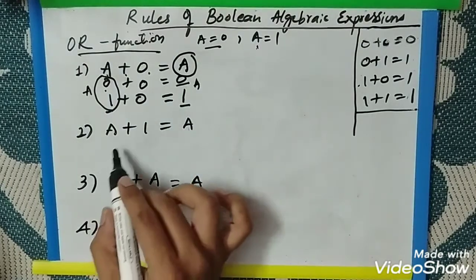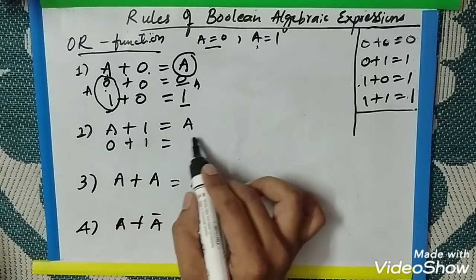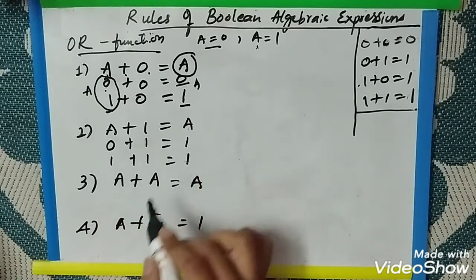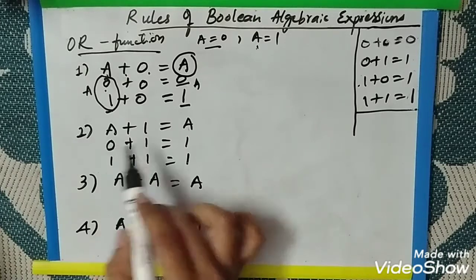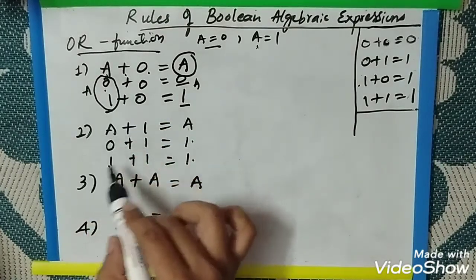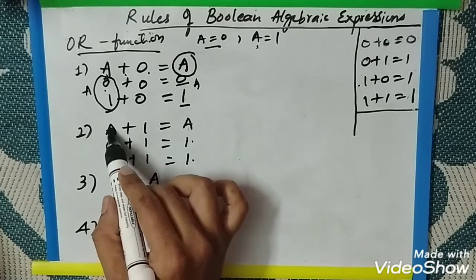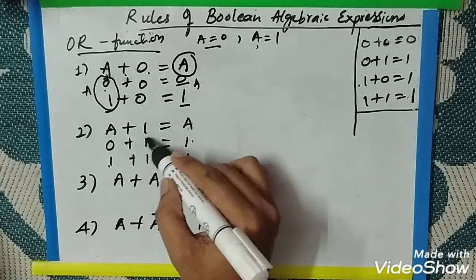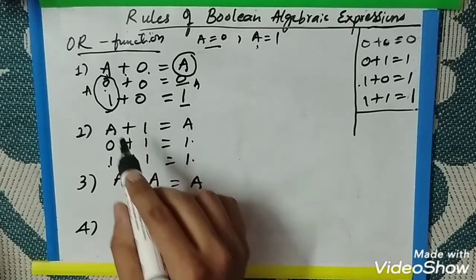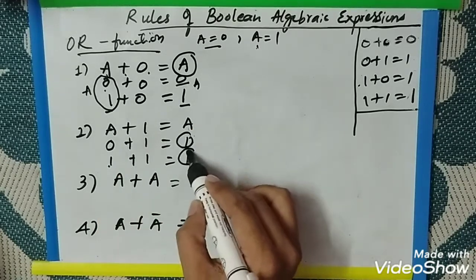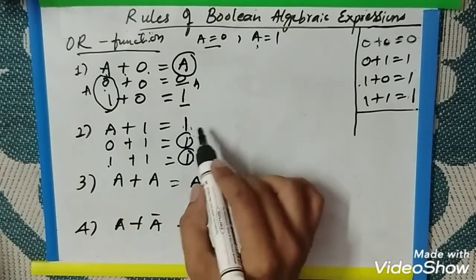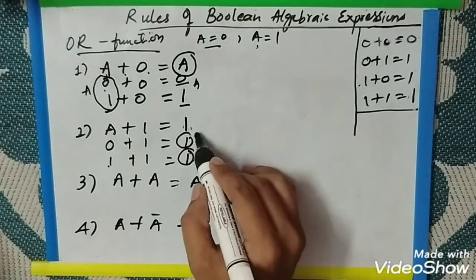Next rule, A plus 1. Let us take first 0. 0 OR with 1 is 1. When A is 1 OR with 1, again it is 1. Now you can see here, when A is 0, answer is 1. When A is 1, answer is 1. So what is the difference between the first rule and the second rule is, it is not dependent on the value of A. But when the second input is 1, if first input is 0 or 1, the answer is always 1. Therefore, A plus 1 is 1. Always the answer is 1.